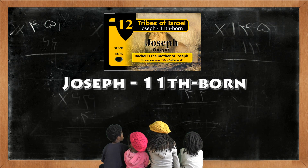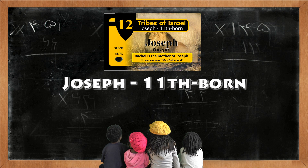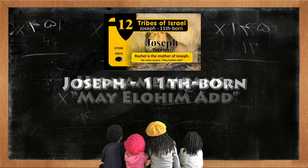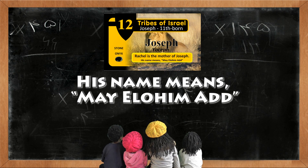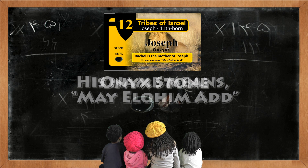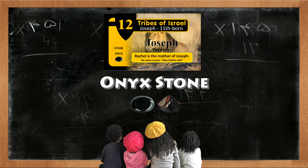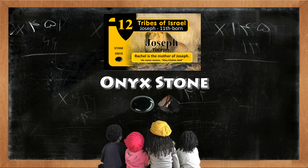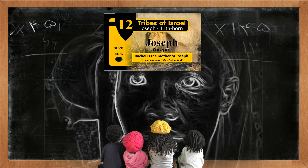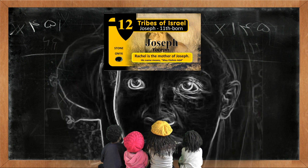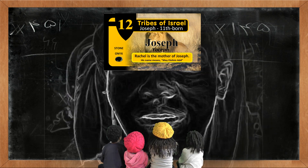Joseph is the eleventhborn son. His name means May Elohim Add. The onyx stone represents the tribe of Joseph. Rachel is the mother of Joseph.